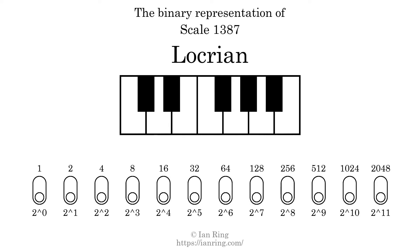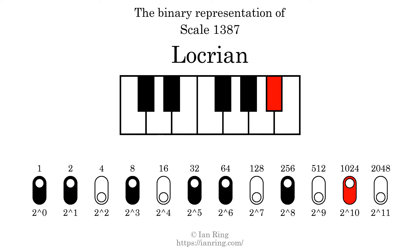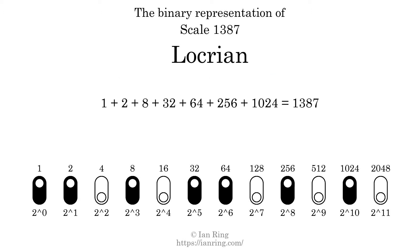The binary representation of this scale is determined by mapping tones of the scale to binary digits. Each binary digit represents a power of 2. To get the scale number, we add the powers of 2 together. The powers of 2 that are present in the scale, all added together, equals 1387. That is why the scale number, in decimal, is 1387. The scale number not only enumerates the scale with a unique index, but it also literally describes the tonal content of the scale.